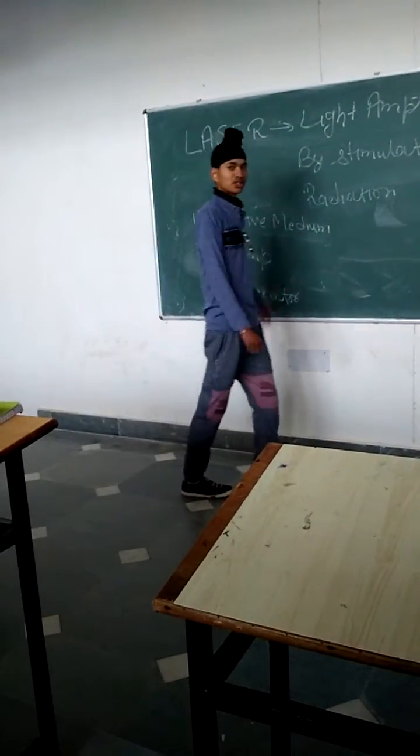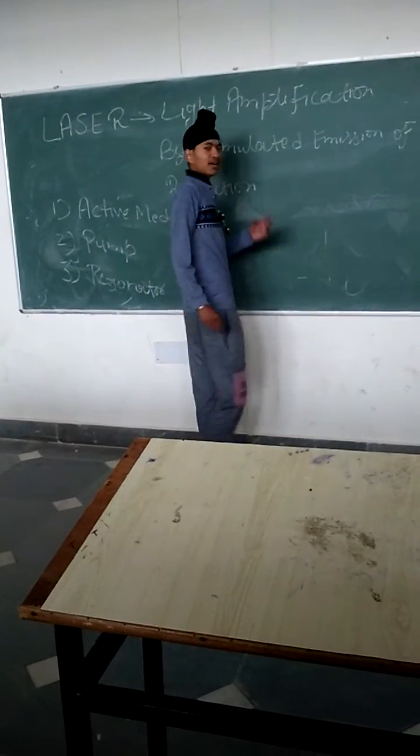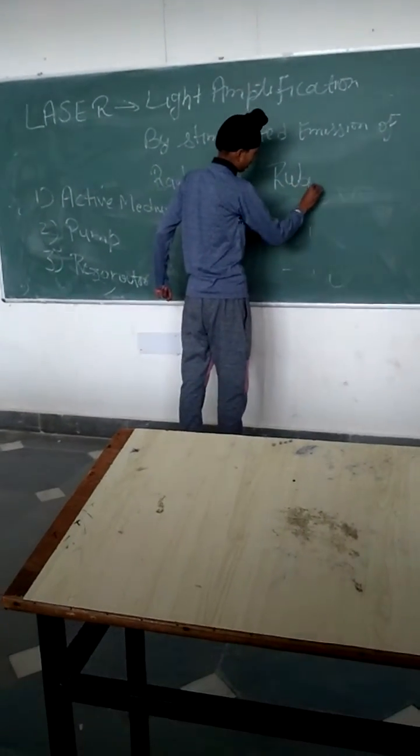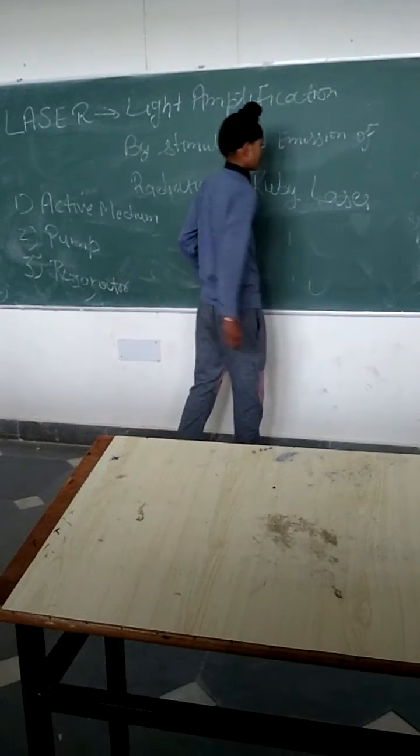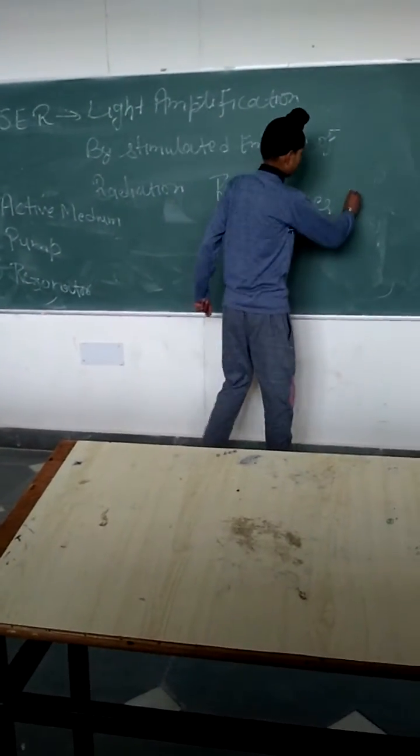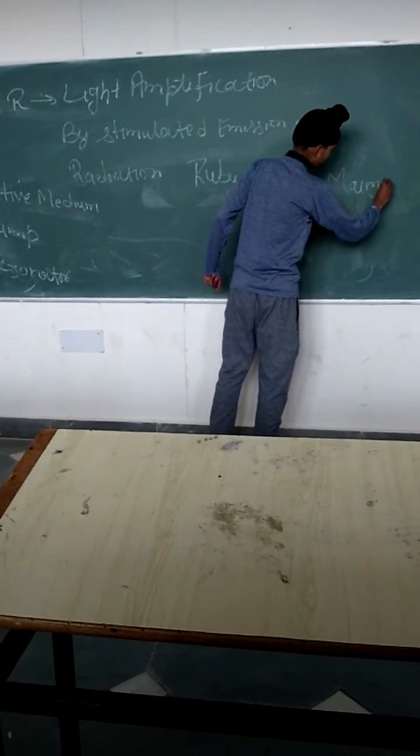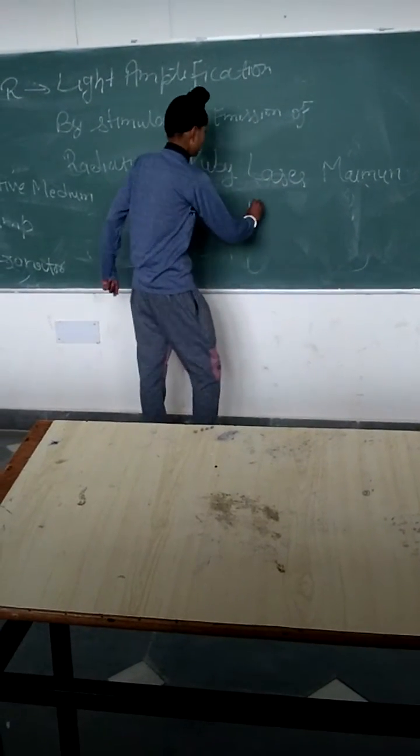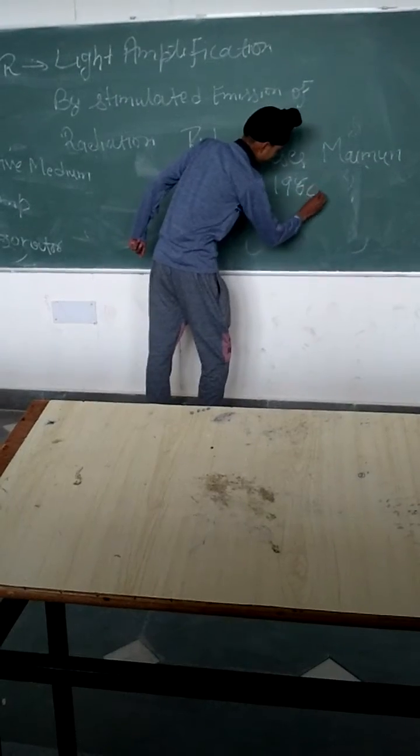Now we shall discuss about world first laser. World first laser was ruby laser. Ruby laser was discovered by Maiman in 1960.